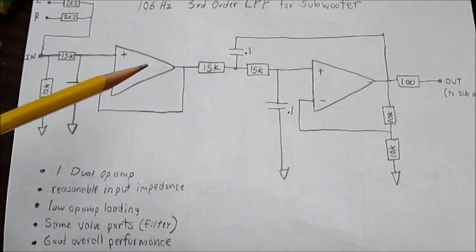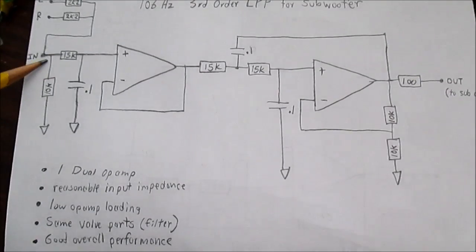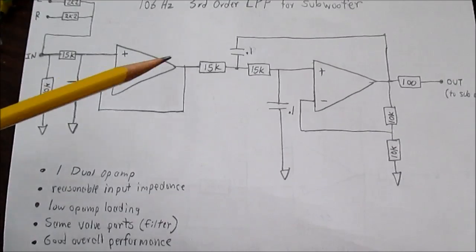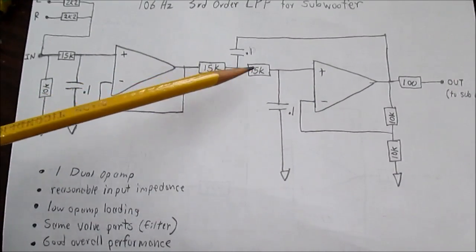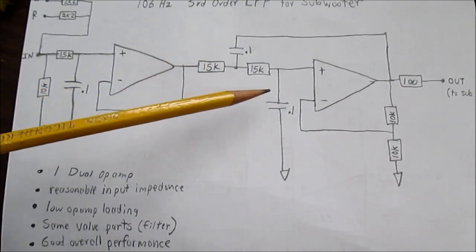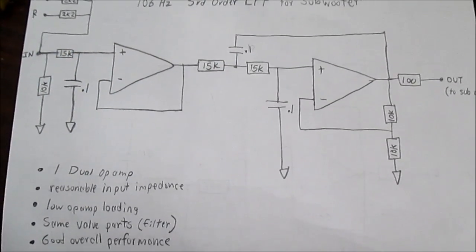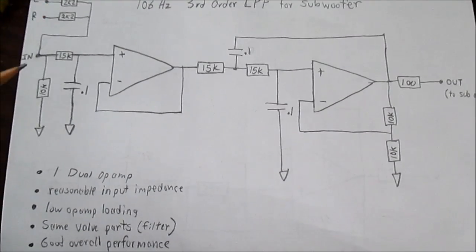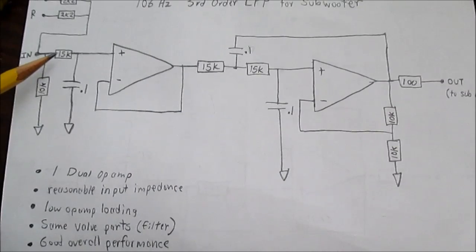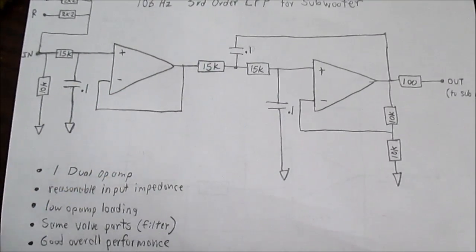Well, it uses one 8-pin dual op amp IC. So, it's very small and simple. Reasonable input impedance. It doesn't load down the device that's driving the circuit due to the filtering action. Low op amp loading. That just means the outputs of the op amp are not loaded down by the filtering action. If you had too low of resistance, as the frequency increased, these capacitors pretty much short out the signal. And you don't want to load down these op amp outputs. Because it means more distortion. And you could cause it to clip. Same value parts. The three resistors and three capacitors that make up the filter. Here's a 15k, 15k, 15k. 0.1, 0.1, 0.1 microfarad capacitors. They're all the same value.